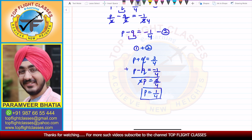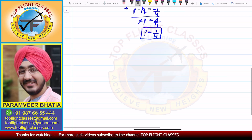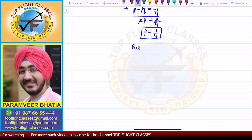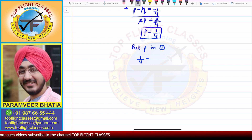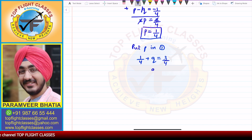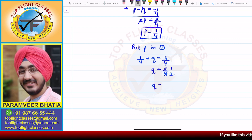Substituting p equal to 1 by 4 into the first equation: 1 by 4 plus q is equal to 3 by 4. So q is equal to 3 by 4 minus 1 by 4, which is 2 by 4, that is 1 by 2. So q equals 1 by 2.